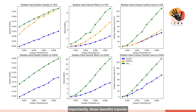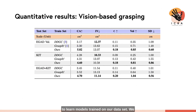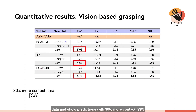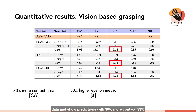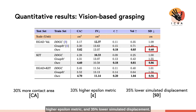Importantly, these benefits transfer to learned models trained on our dataset. We retrain an RGBD grasping network on Grasp-1M data and show predictions with 30% more contact, 33% higher epsilon metric, and 35% lower simulated displacement.